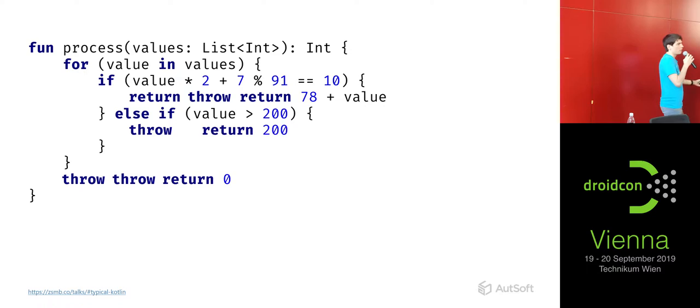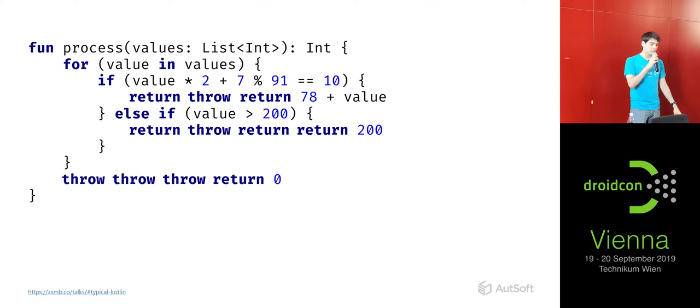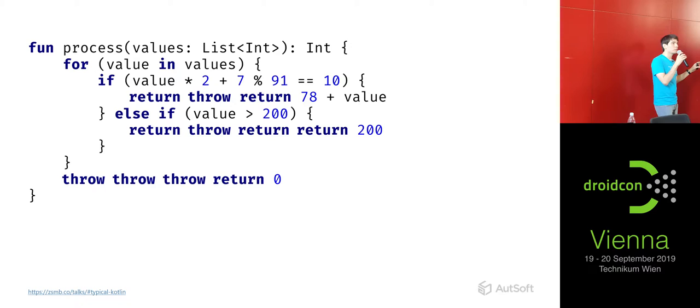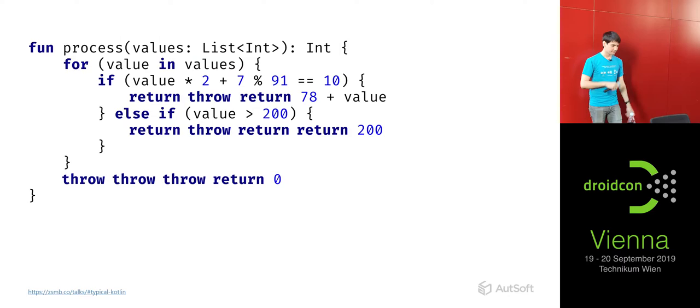You can put these keywords all over your codebase. If you want to confuse people, I suggest not going too far because it becomes obviously bogus. But if you do just a 'throw return' or maybe a double return here and there, that can be very confusing and hard to catch.